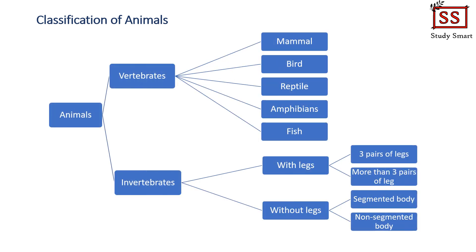I hope you all understand well the importance of biodiversity. Now let's move on to the classification of animals. We can easily classify animals into two bigger parts: vertebrates and invertebrates. Vertebrates are those animals with a backbone, while invertebrates are those without a backbone. There are five types of vertebrates: mammal, bird, reptile, amphibians, and fish. As for invertebrates, we can classify them into two categories — those with legs and those without legs — and classify further based on the number of legs and the type of body.